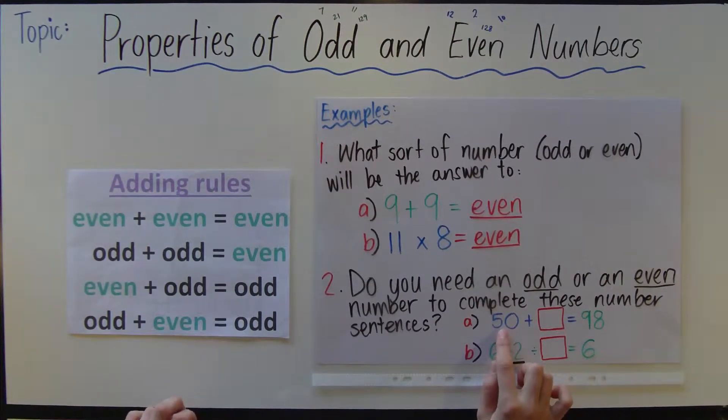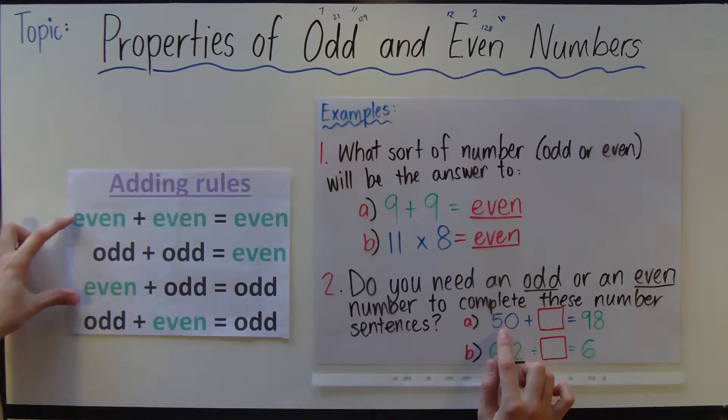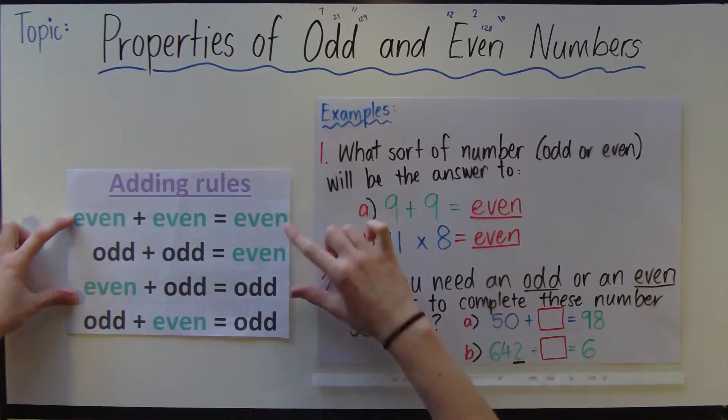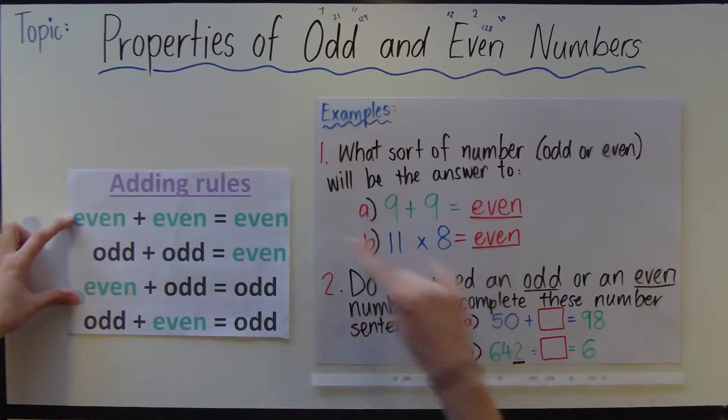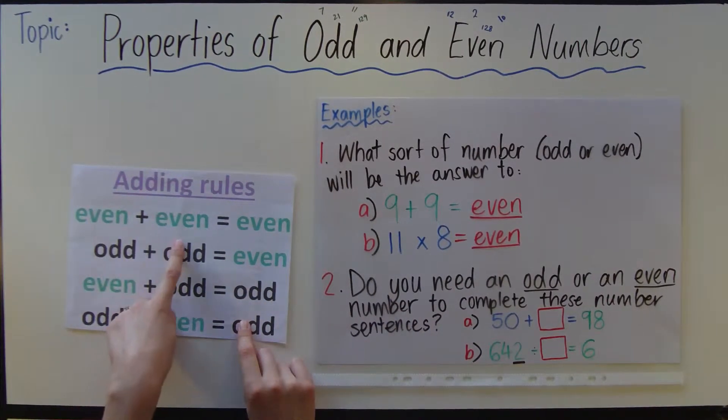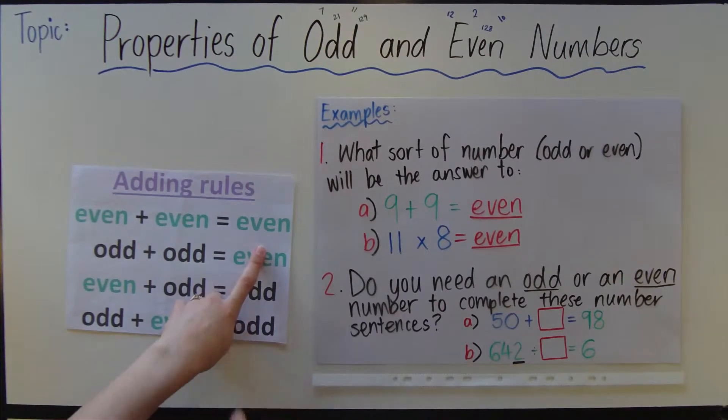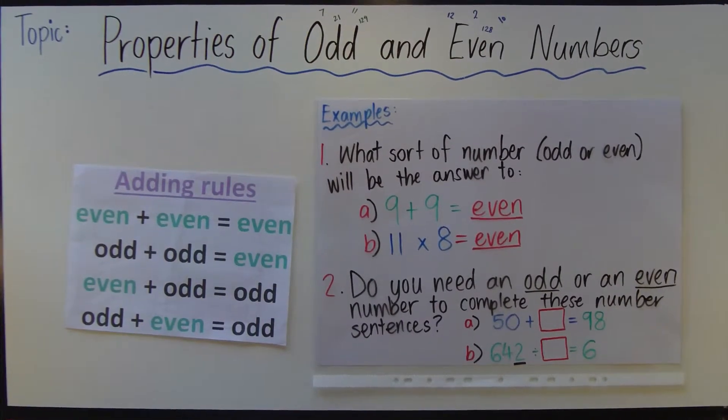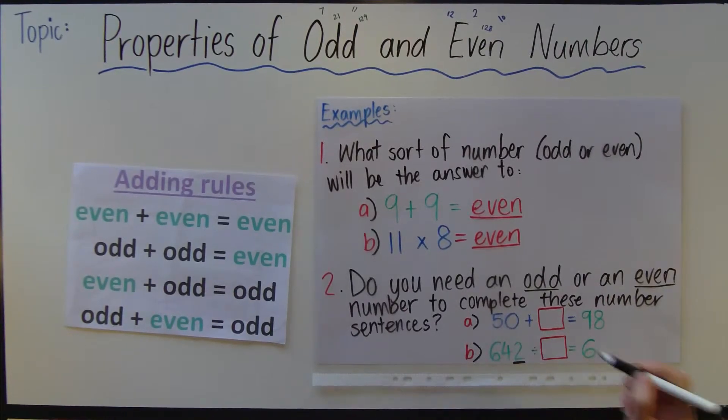I've got here 50, which is an even number. It'll be one of these. Plus something is 98, and 98 is an even number as well. So it's this one up here: even plus even equals an even number. So you would just write E. I'm just writing E for short, even.